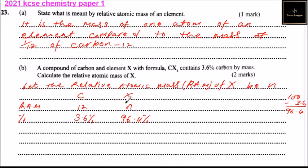You can get the number of moles: divide the percentage 3.6 by 12. For X, divide the percentage 96.4 by n. So you get this one is 0.3, and this one, since n is unknown, you still remain with 96.4 divided by n.